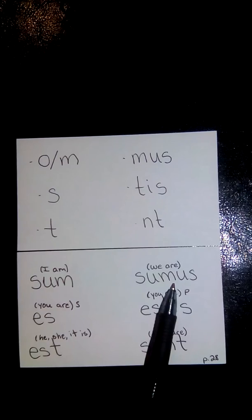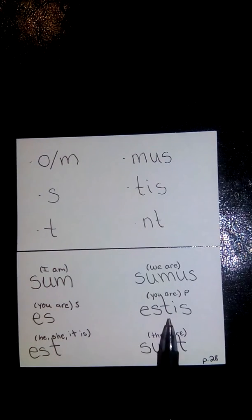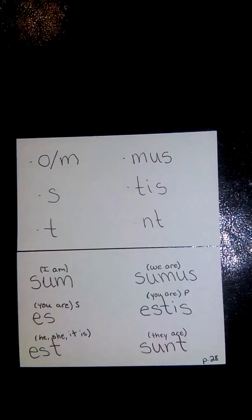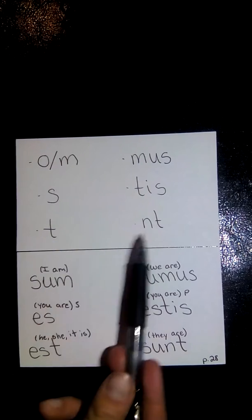Now first person plural has the mus. Second person plural has the tis. And third person plural has the nt. Just like when we were learning our verbs before we used a lot of t and nt right here.